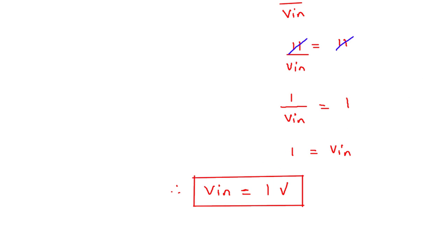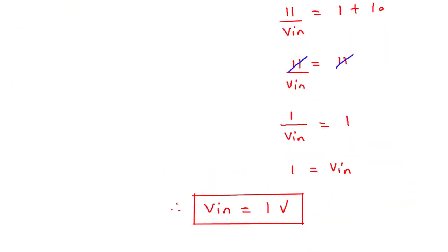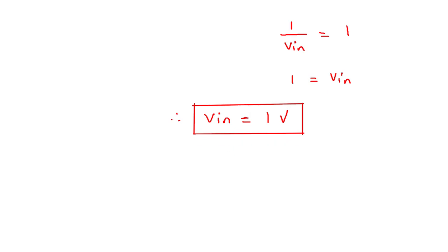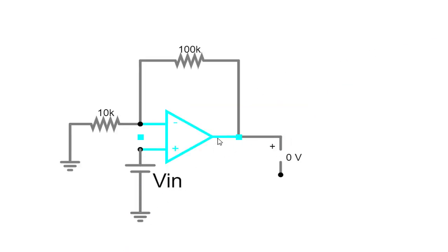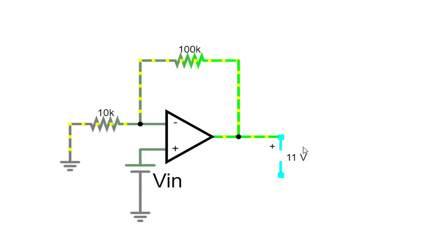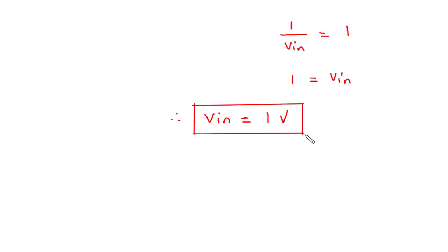Now we verify the answer in the simulator app. We need the output voltage to be 11V, and our calculated Vin is 1 volt. Substituting 1V DC for Vin in the simulator and applying it, we can see the output voltage is 11V. Hence our answer is correct.